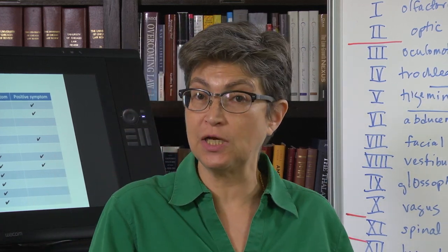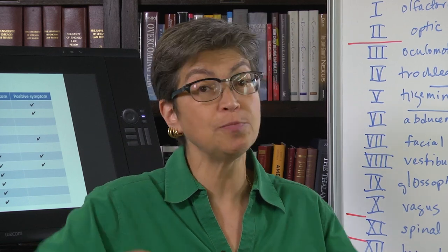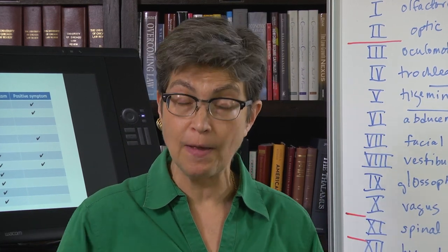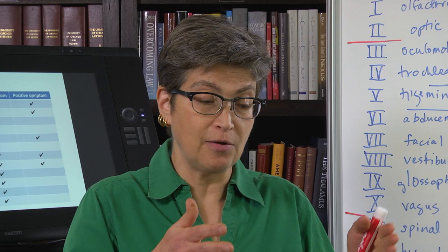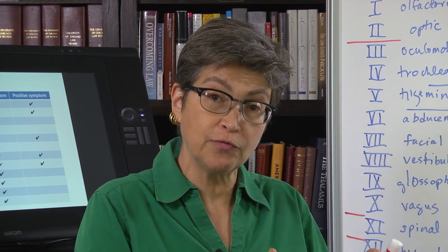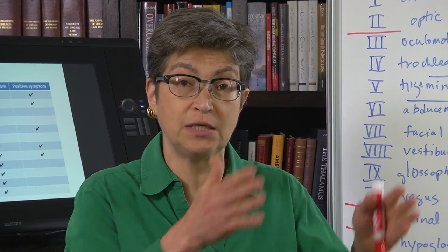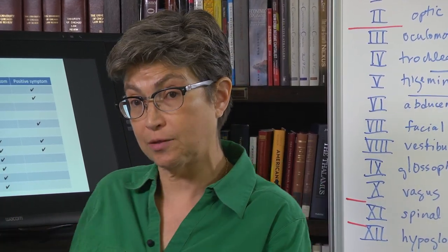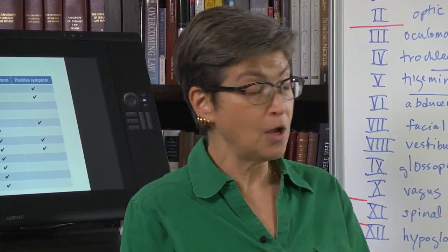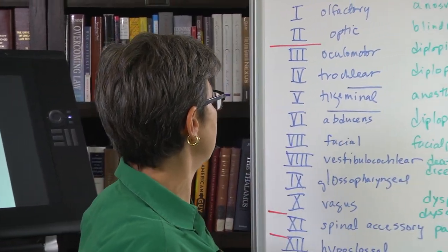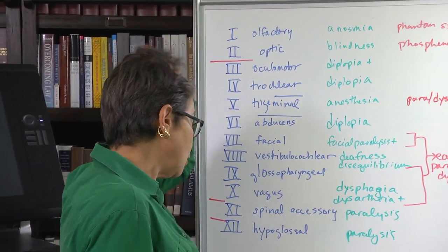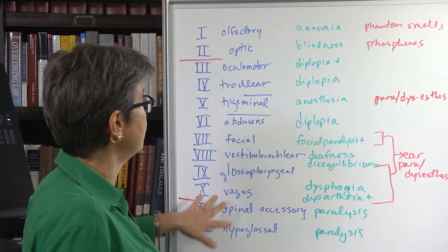There could be positive signs in the motor system. These could be excess movements, for example. But what we're going to see is that when the peripheral nervous system is damaged, you don't get positive signs on the motor side. You only get them on the sensory side. So what we're going to go through is what are the results of damage to the different nerves?